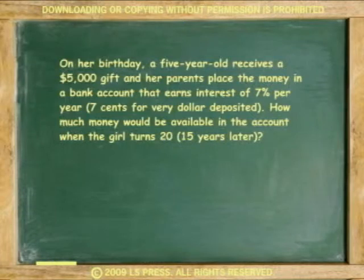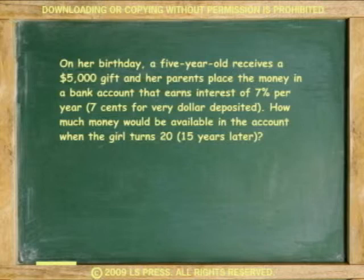Let's see an example for exponential growth. On her birthday, a 5-year-old received a $5,000 gift and her parents placed the money in a bank account that earns interest at 7% per year. This means that every year she will receive 7 cents for every dollar deposited. How much money would be available in the account when the girl turns 20, or 15 years later?